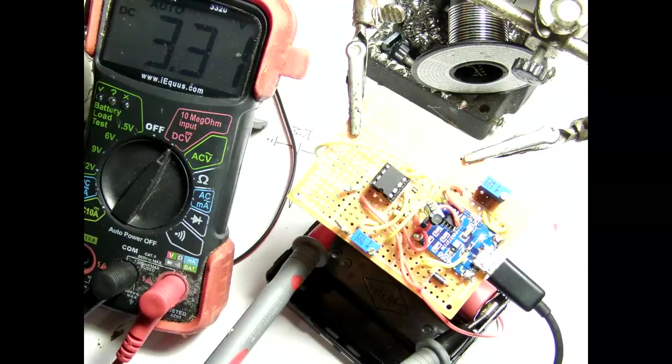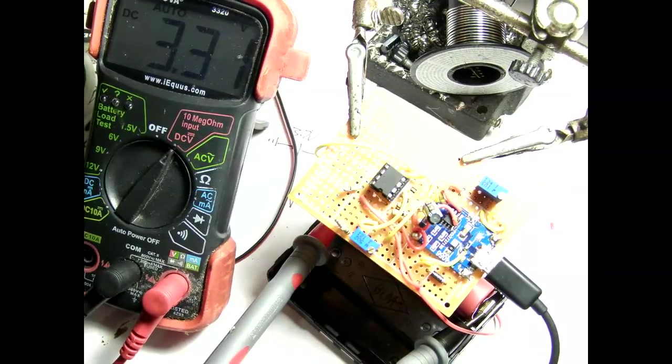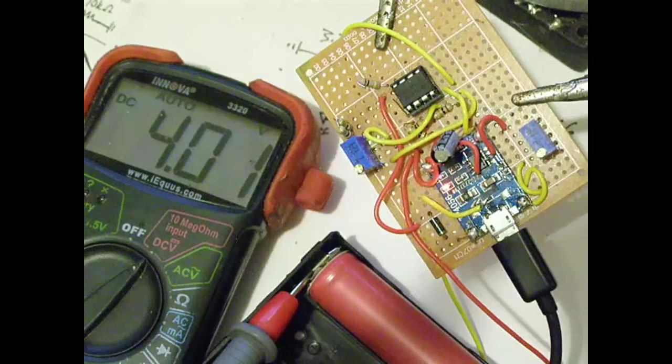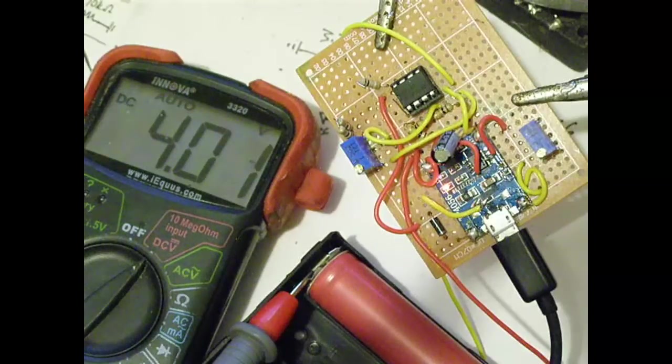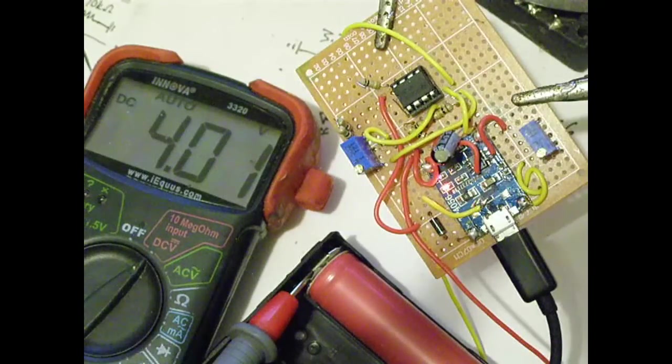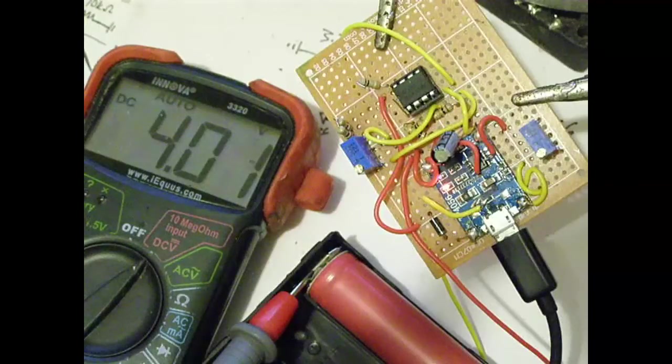I set the voltage reference to approximately 2 volts and then started charging an 18650 cell. Several moments later, the charging stopped as planned.